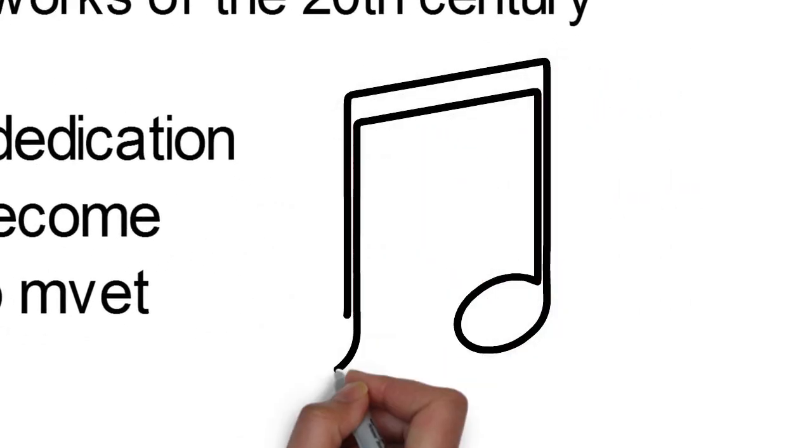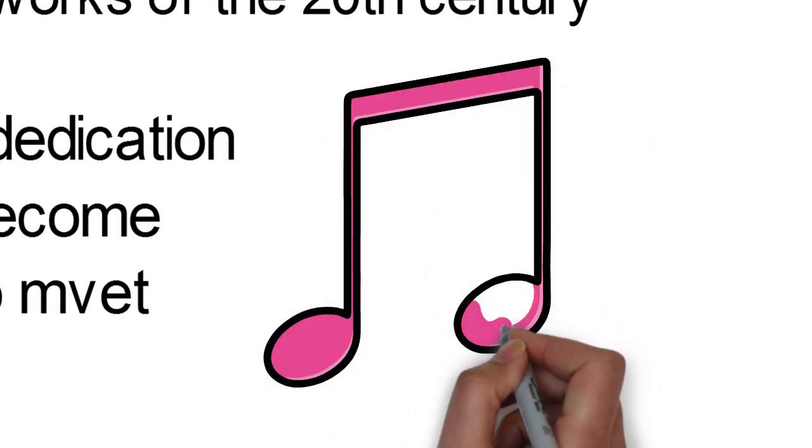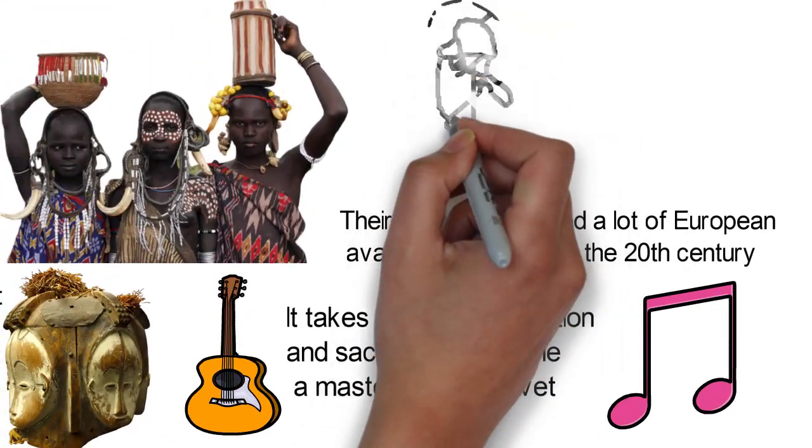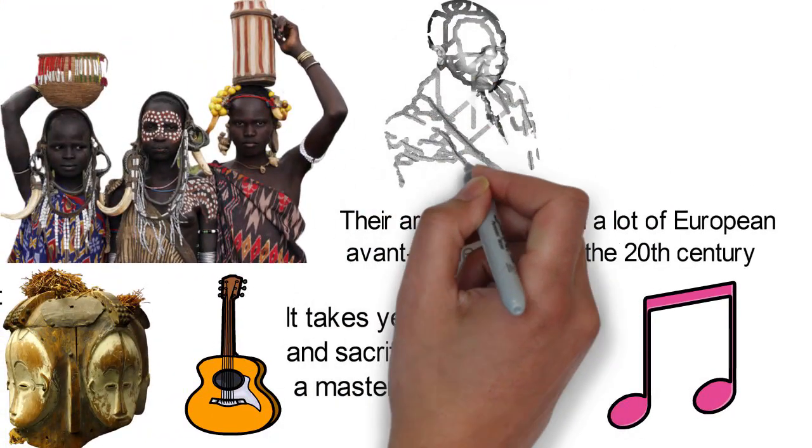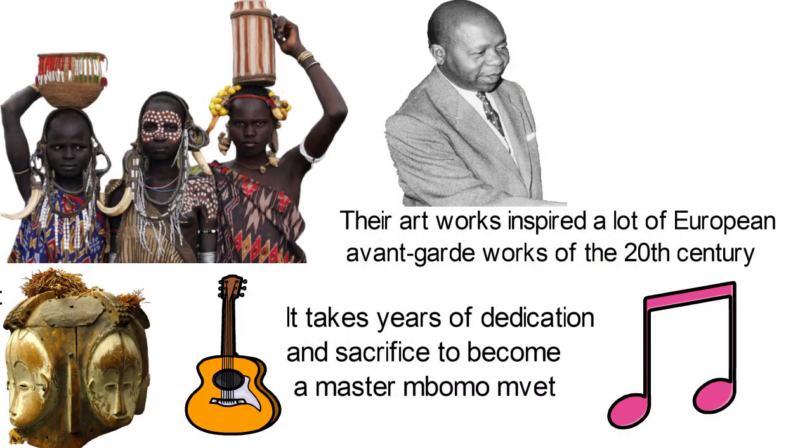The Mbomo Mbe usually visits each village monthly to play at the village squares where the villagers gather to be entertained. Leon Mba, who was Gabon's first president after independence in 1960, was from the Fang ethnic group.